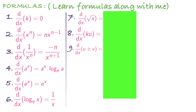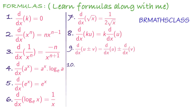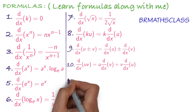Now we are going to learn another two formulas in this video. Tenth formula — a very, very important formula in differentiation, also known as the product rule. d by dx of uv, where u is one function and v is another function: d by dx of uv is u into derivative of v plus v into derivative of u. It starts with u — u into derivative of v, plus v into derivative of u.